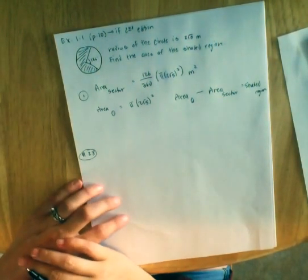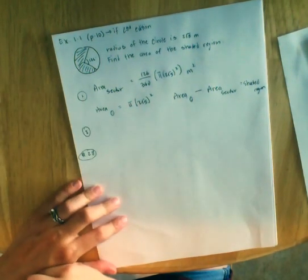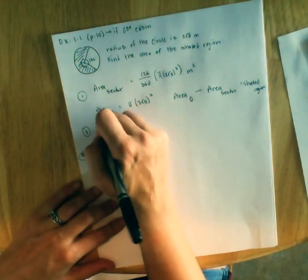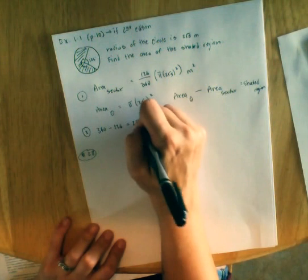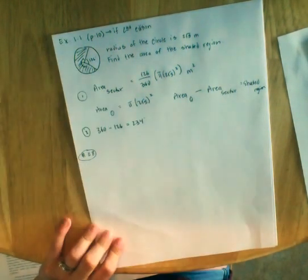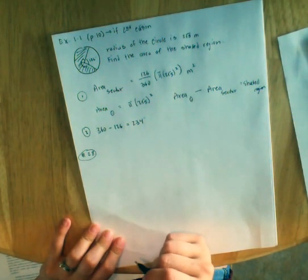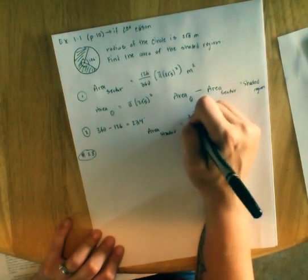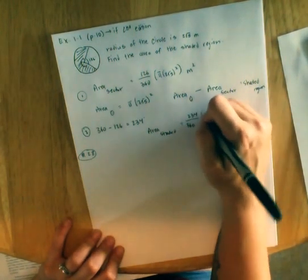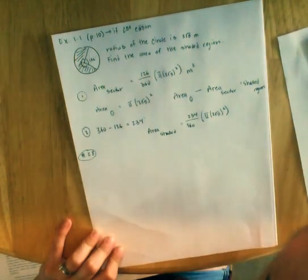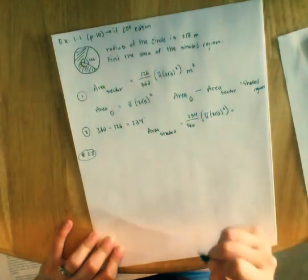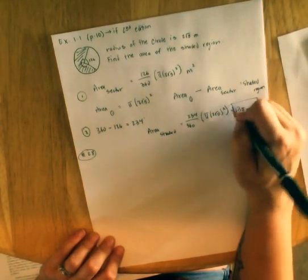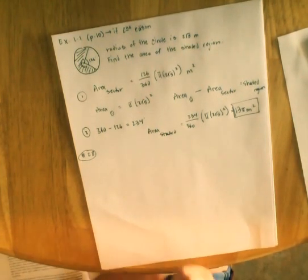This is one way you can do it. Another way, perhaps easier, is we would say if this is 126 degrees, we can find this angle by doing 360 minus 126, which gives me 234 degrees. Now, this portion over here is a sector with a central angle of 234 degrees. So the area of my shaded is the central angle, which we're now saying is 234, over 360 times pi r squared. We can do this in our calculators. It gives us 13 pi meters squared, which is our final answer. Notice how I put the units. Do not forget your units.